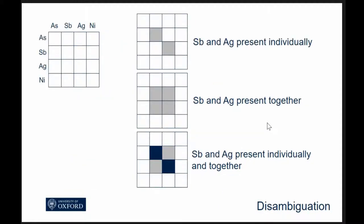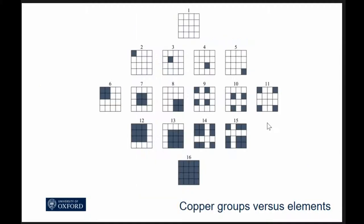We went for this idea of a 4x4 array. You can see how you can begin to separate those different cases out. If they're present individually we can see that, if they're present together it's displayed differently, and if they're present together and individually we can still see that. You come down to 16 different combinations of those trace elements, related to 16 copper groups already used by the project. But what John and I really wanted to do was try and get away from a predetermined group.